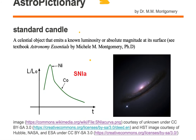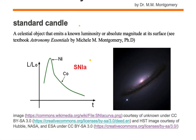Similarly, we have objects in astronomy that emit known luminosities at their surfaces. For example, this Type 1a supernova that we see in the lower left image of this galaxy. This Type 1a supernova emits the same luminosity for all types of Type 1a supernovae, for all examples of them.